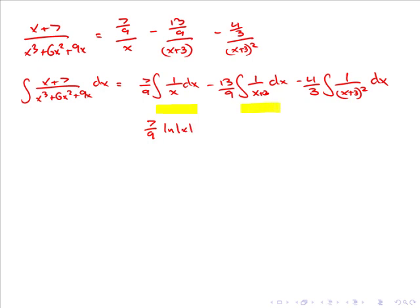In the second integral, we have the integral of 1 over x plus 3 dx. Using the substitution of u equals x plus 3, this can be integrated to give us ln the absolute value of x plus 3.